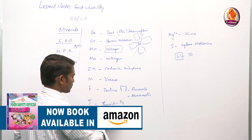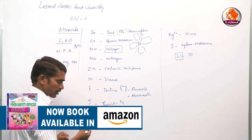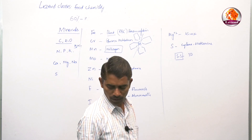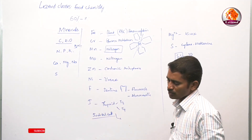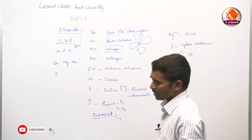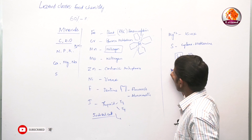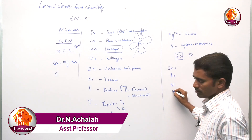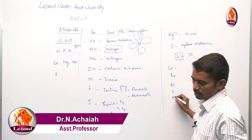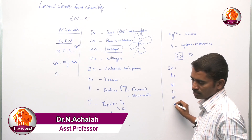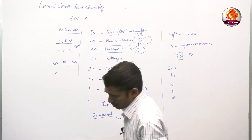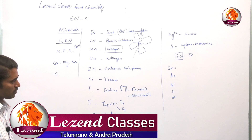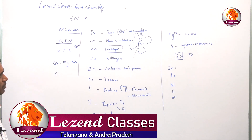Iodine is also essential for metamorphosis and metabolic activities. In addition to these, there are other elements like tin, boron, aluminium, silicon, and arsenic — these are called ultratrace elements and are also essential for normal activity.